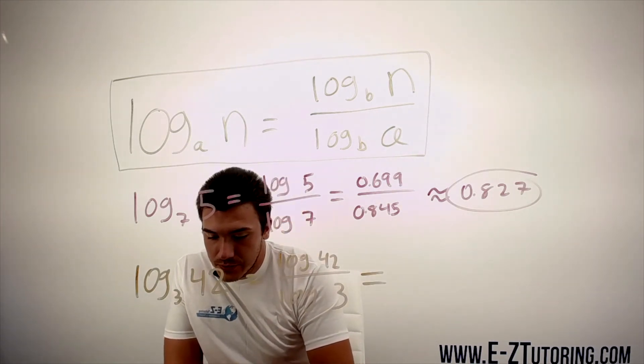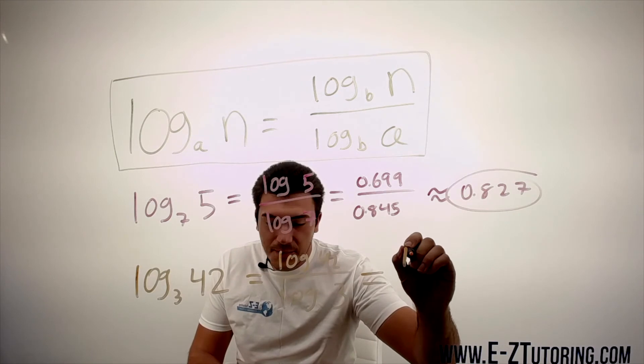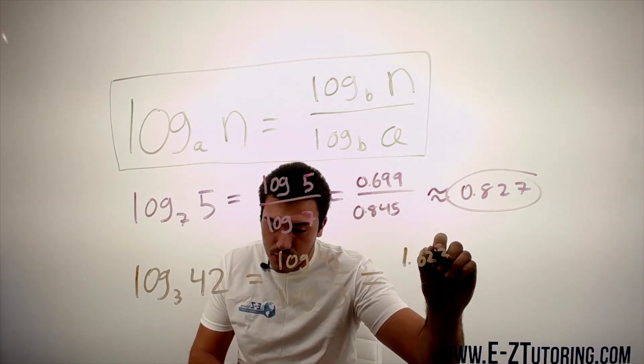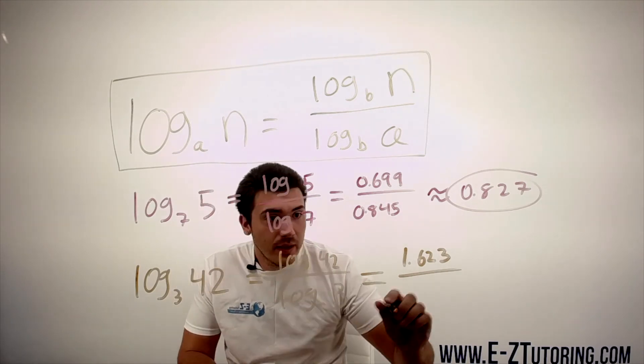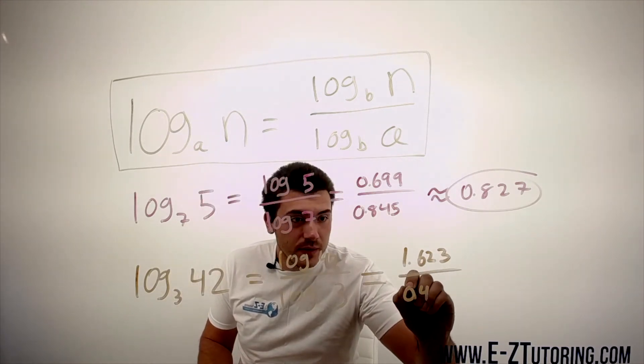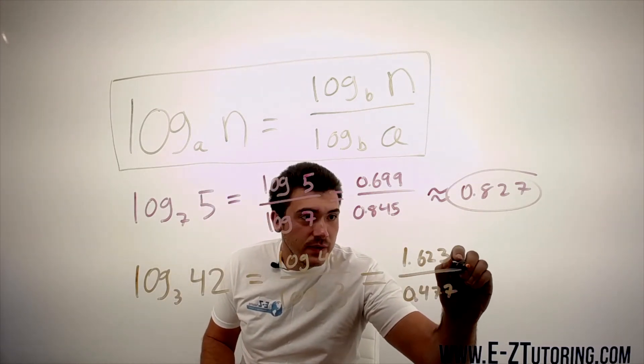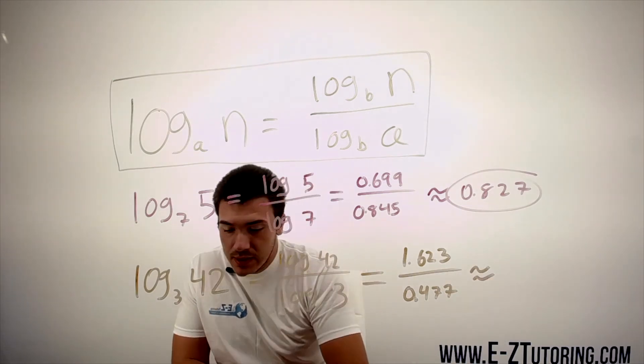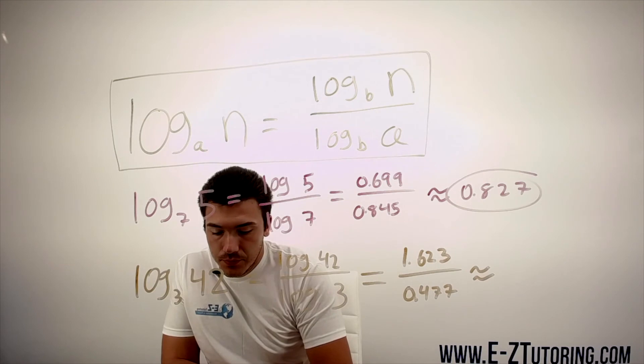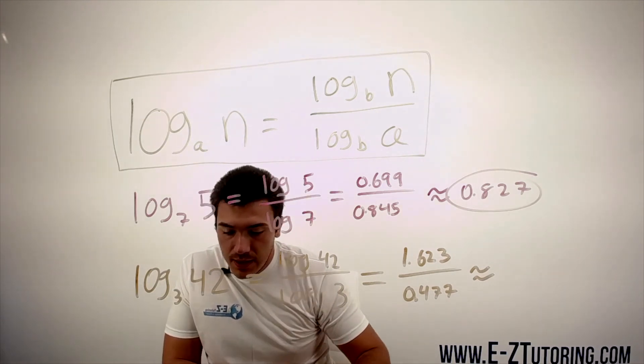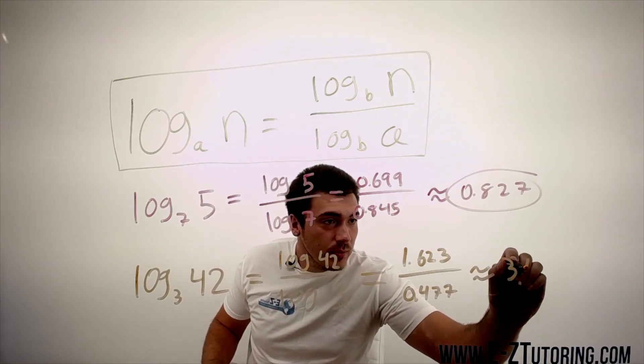So log of 42 in the calculator gives us about 1.623, and log of 3 gives us about 0.477. Let's figure out what this is equal to. That gives us about 3.4.